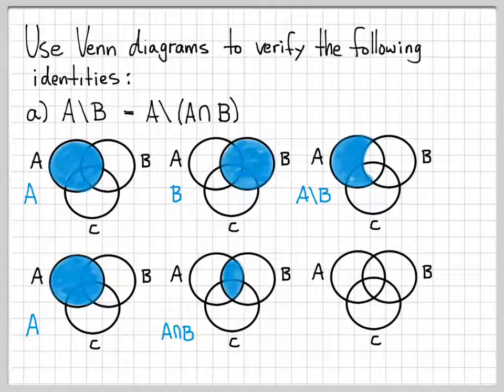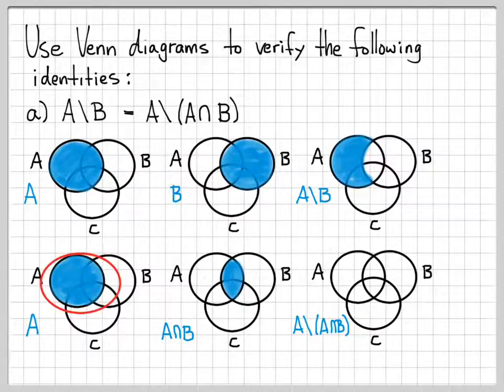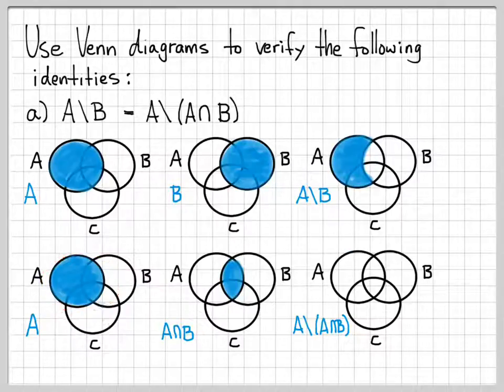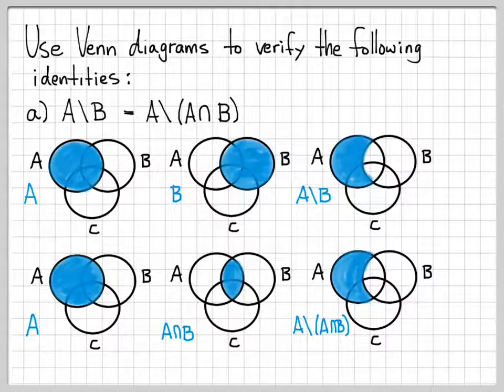And then this final one, I need to do A difference the quantity A intersect B. So that means I need to take A and not shade in this part. So again, that's going to look like this. So I've now created a Venn diagram, A difference quantity A intersect B. And if I compare it to what I had just a minute ago for A difference B, these are obviously the same thing. So I've established that this identity is true by using Venn diagrams.